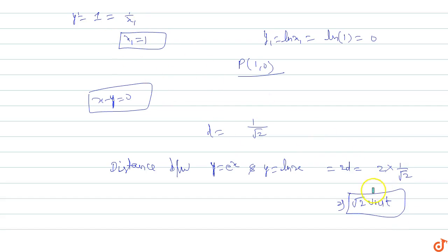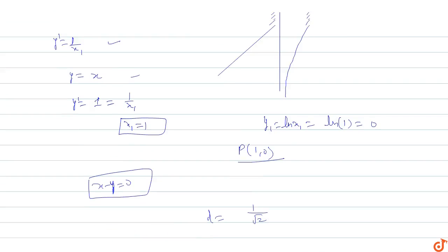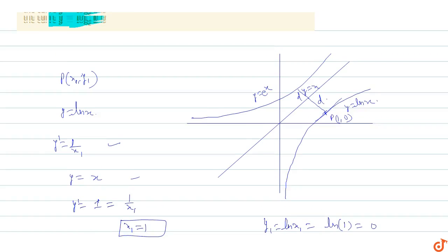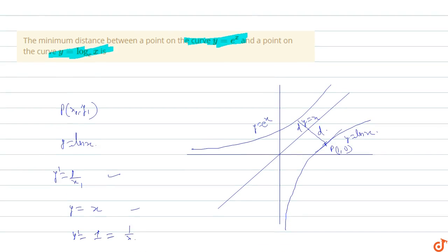So the minimum distance is root 2 units. The minimum distance between the two curves y equals e raised to power x and y equals ln x equals root 2 units. This is the answer — the total minimum distance between these two curves equals root 2 units.